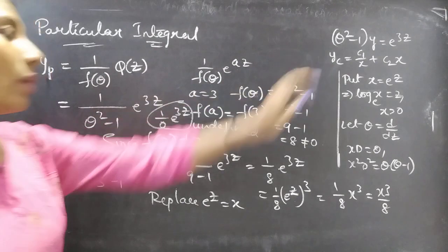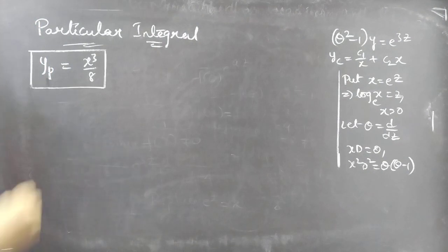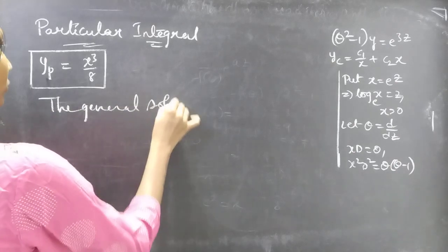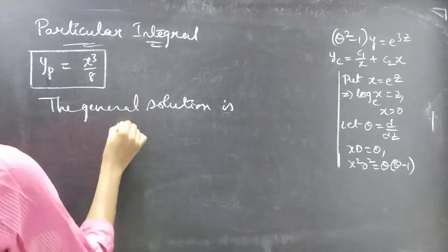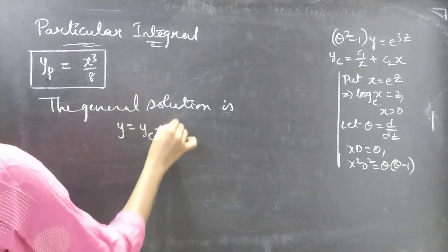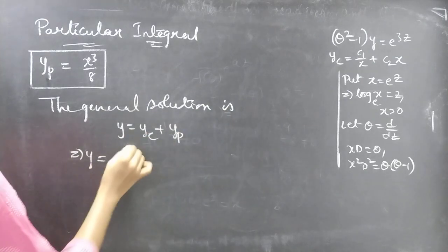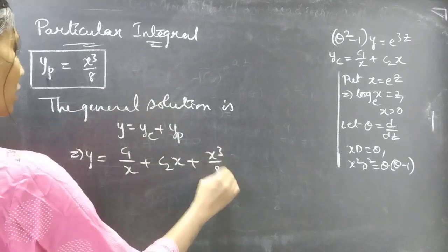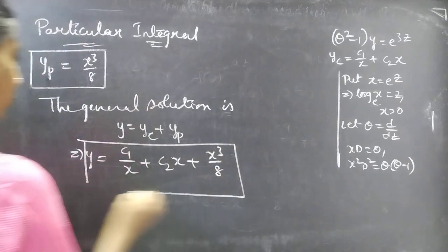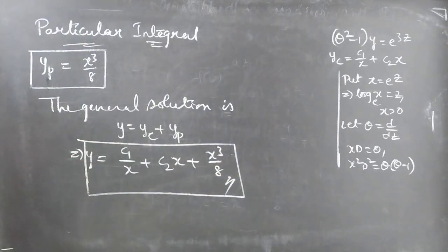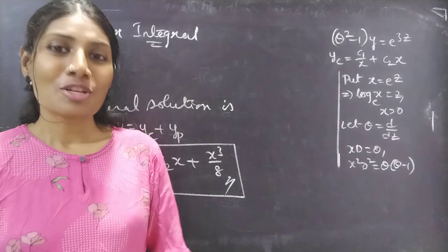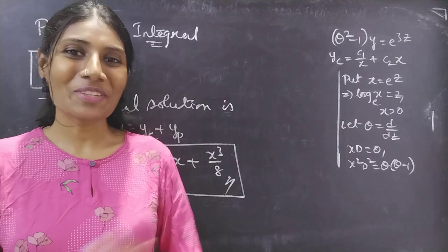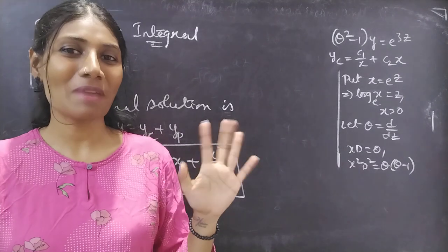We got yp = x³/8 and we have yc. Now let's write the general solution: y = yc + yp = c₁/x + c₂x + x³/8. So this completes the problem. We have seen a problem from higher order linear differential equations with variable coefficients in this video. Hope you understood. See you in the next video — bye-bye.